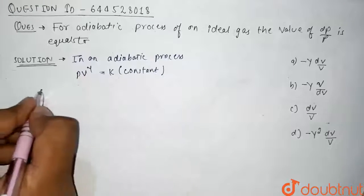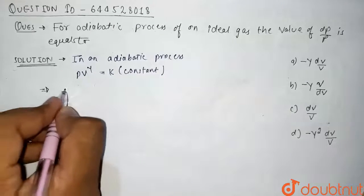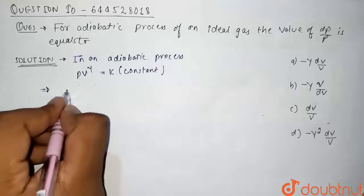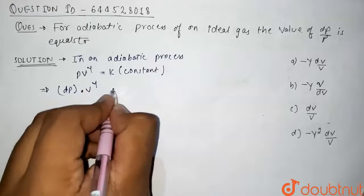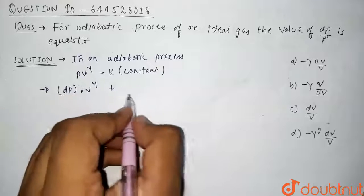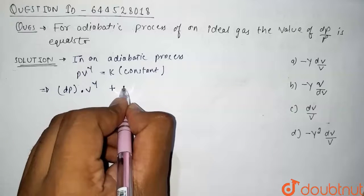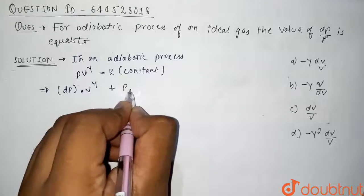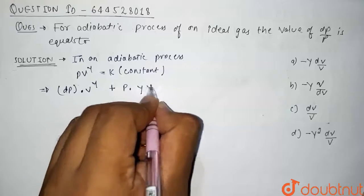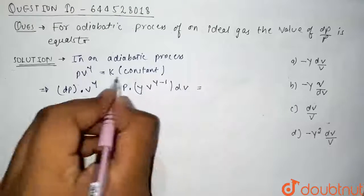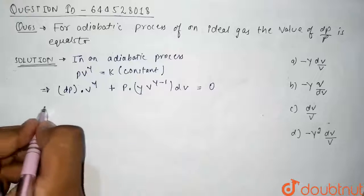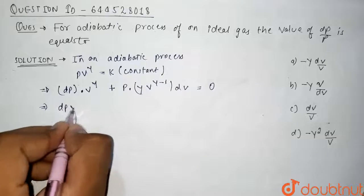If we differentiate the above equation, what will we get? We will get dP into V to the power γ plus, taking another as a constant, so it will be P into γ V to the power γ minus 1 into dV, and this is constant so it will be zero.